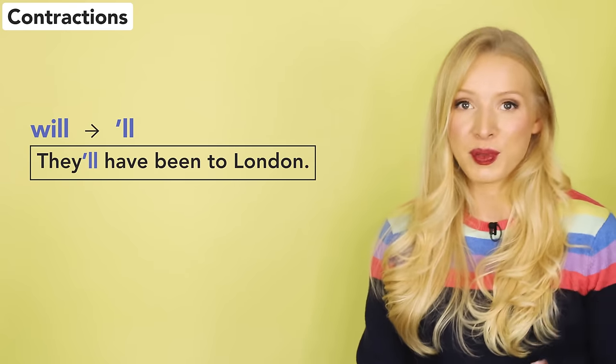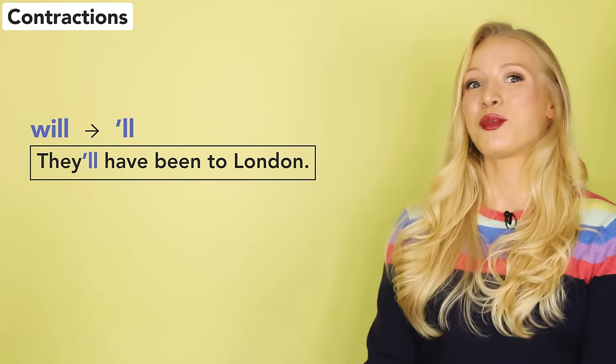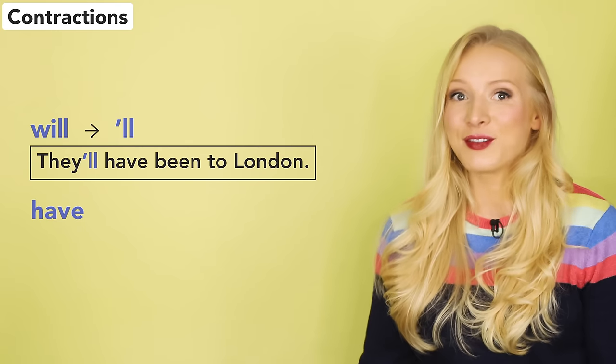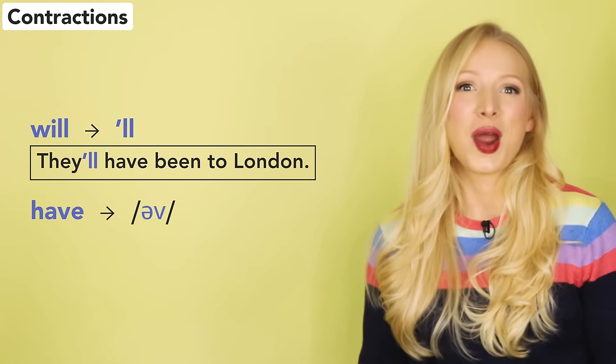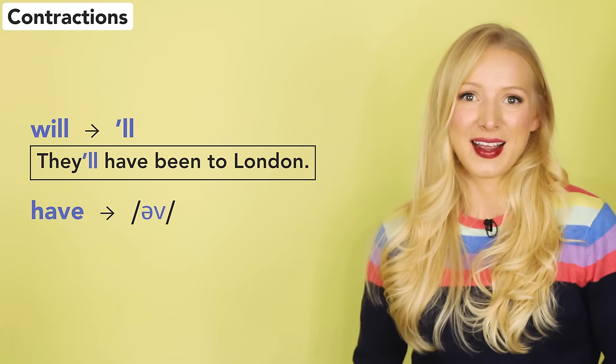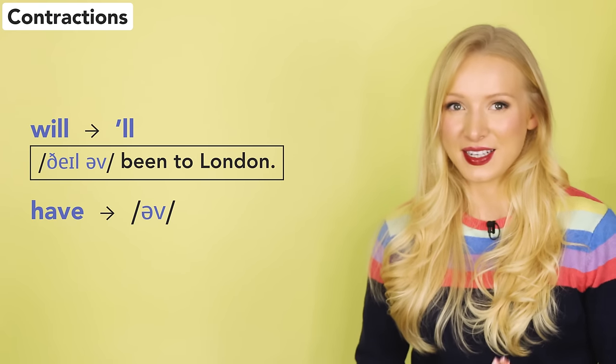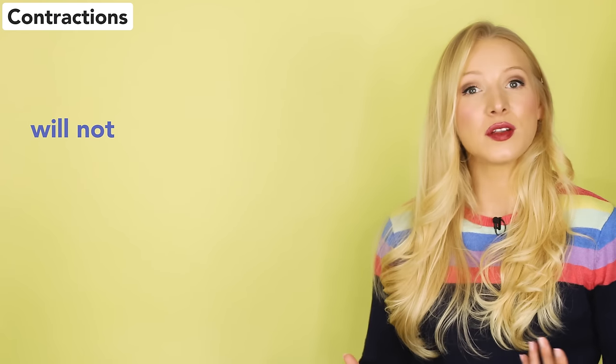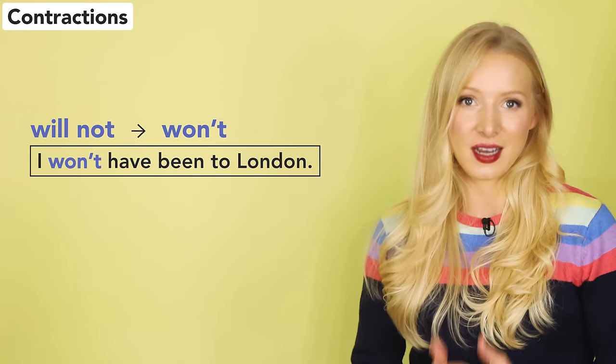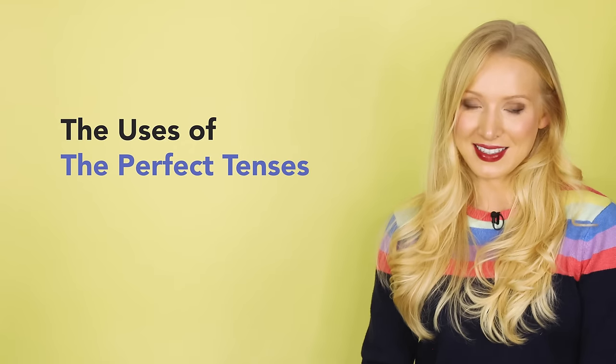'Will' is often contracted to apostrophe 'll' — they'll have been to London. Notice that I pronounce 'have' as 'of' when speaking quickly: they'll have been to London. And 'will not' is usually contracted to 'won't' — I won't have been to London. Okay, now that's all out of the way, let's talk about the uses of the perfect tenses.